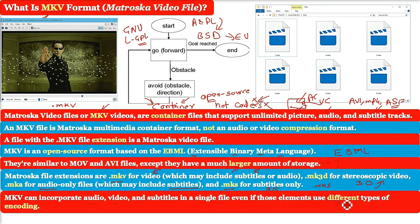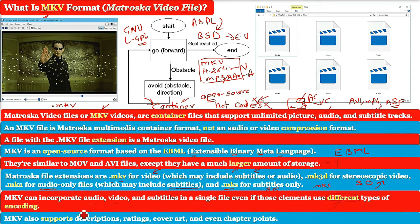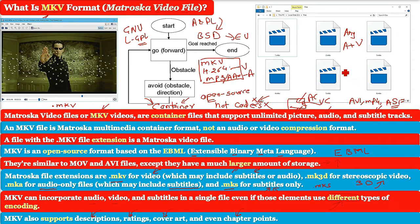For example, you can have an MKV file that contains H.264 video and MP3 or AAC for the audio. MKV also supports descriptions, ratings, cover art, and even chapter points. The MKV container itself also supports almost any audio and video format, making the format highly adaptive and easy to use.